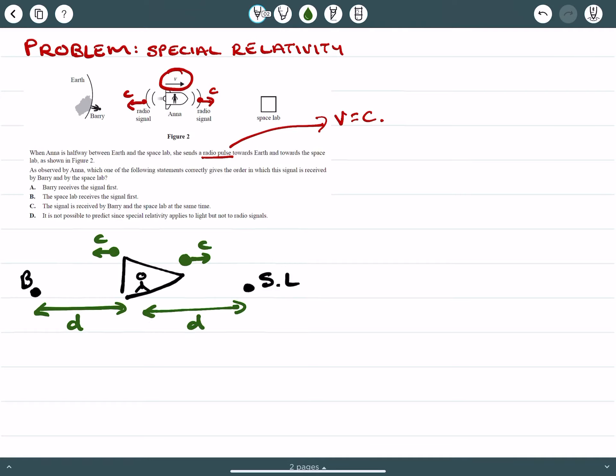So if Anna was going to be stationary, we would expect that, okay, both signals are going to be received at the same time, both by Barry and this space lab. And Anna would observe these.